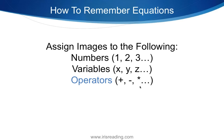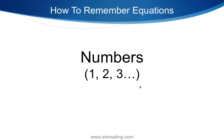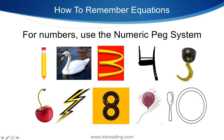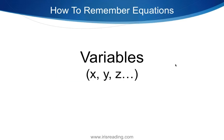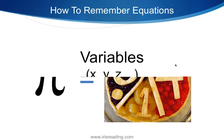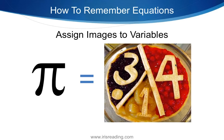For numbers, we already have the Numeric Peg System — one is pencil, two is swan, three is McDonald's, and so on. For variables, you create an image that reminds you of that variable. Pi is easy — just imagine a pie. X looks like a runway for planes taking off, so x means runway in your image. C has a similar shape to Pac-Man. Z could represent a zebra, because Z is for zebra.